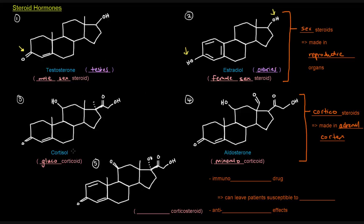You may have guessed the names: cortisol and aldosterone. Cortisol is a stress hormone, and it's called a glucocorticoid because of its effects on blood glucose levels. Aldosterone is a mineralocorticoid because of its effects on the minerals in our body, specifically sodium. Sodium is a mineral, so aldosterone plays a role in sodium levels. Cortisol and aldosterone are both corticoids because they are made and released from the adrenal cortex.